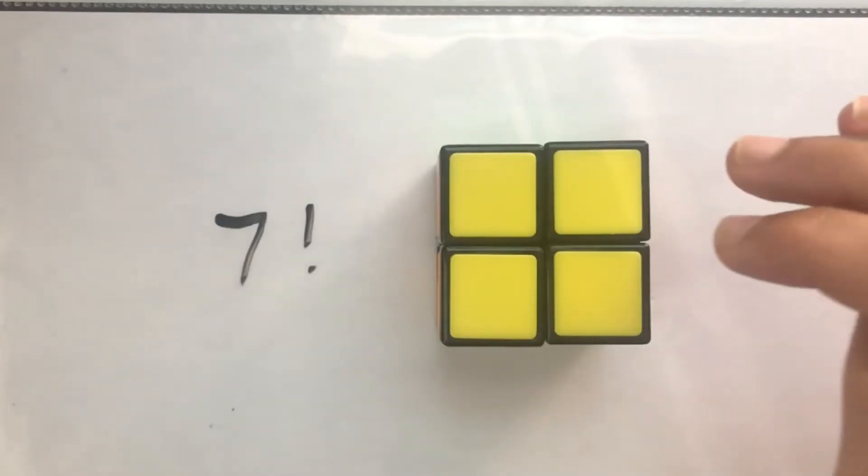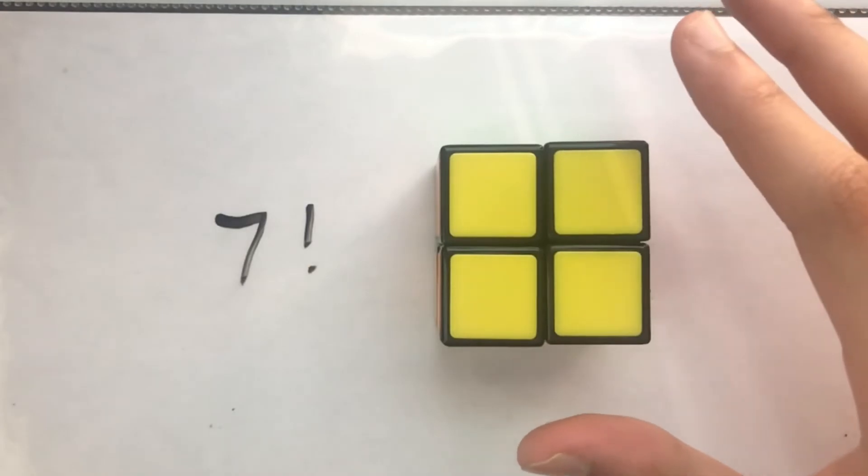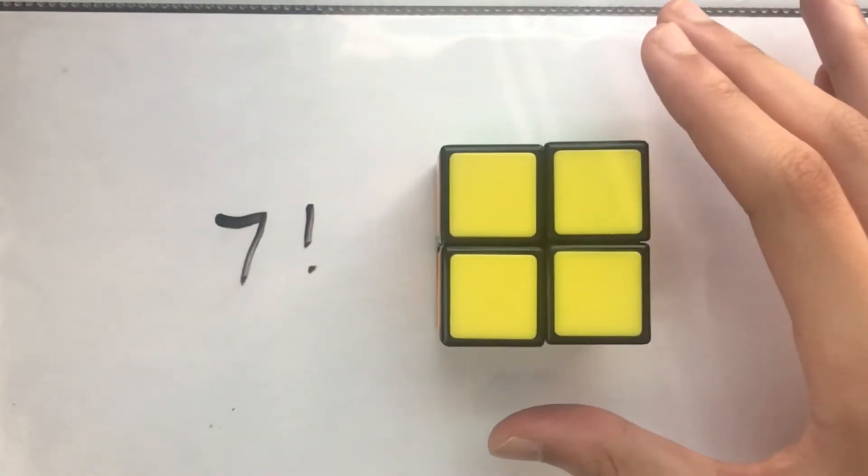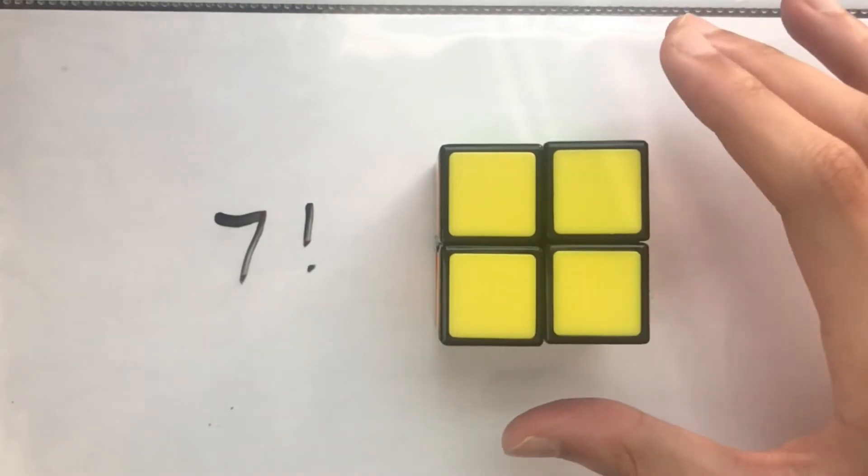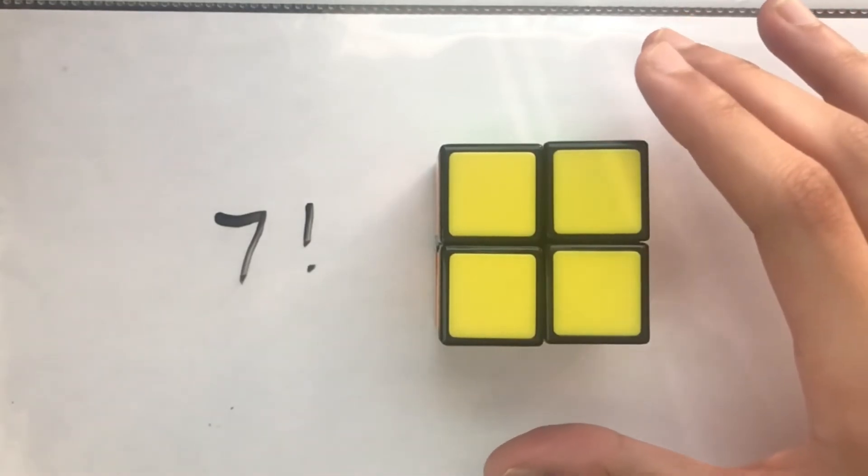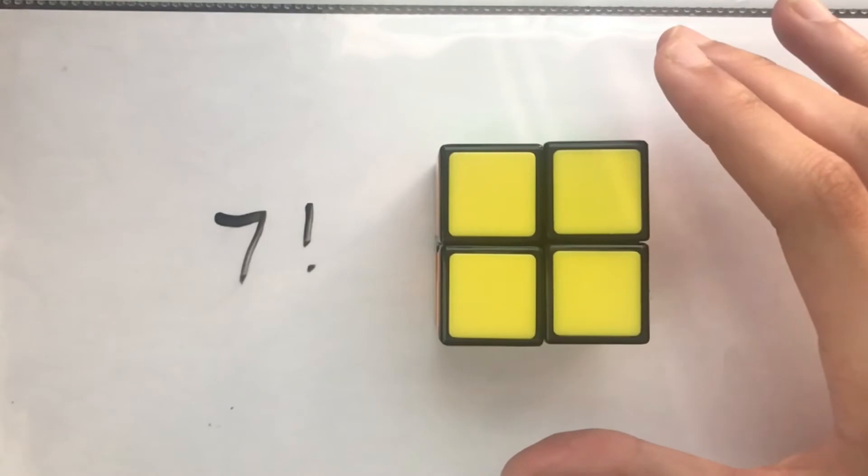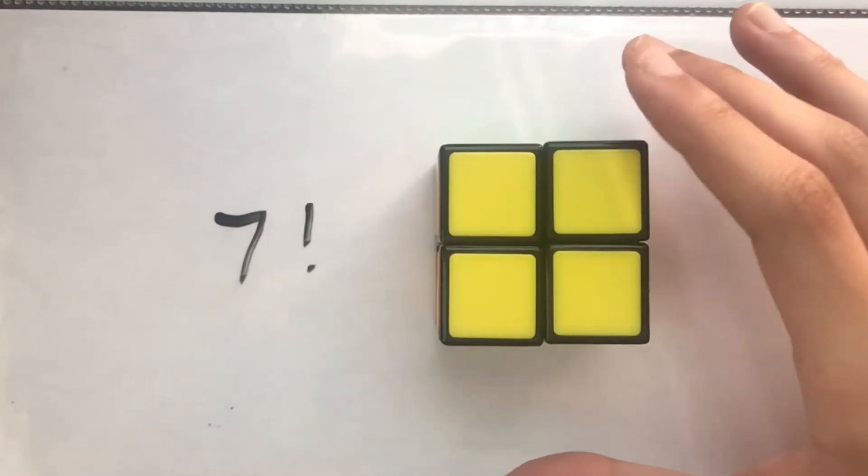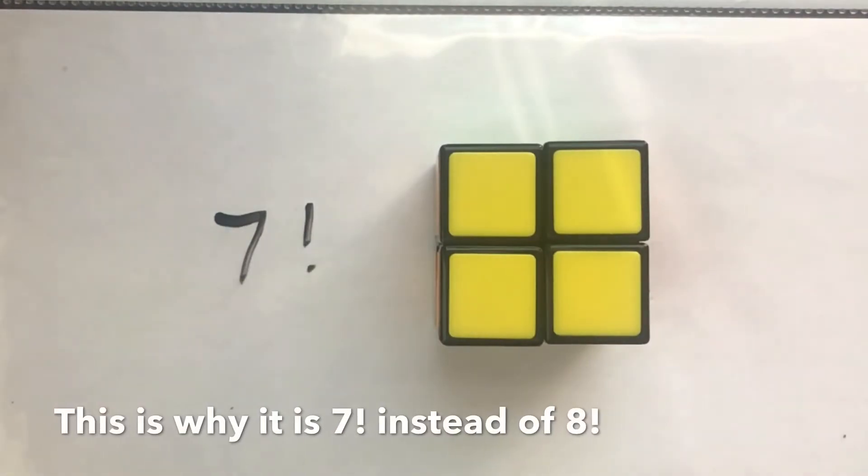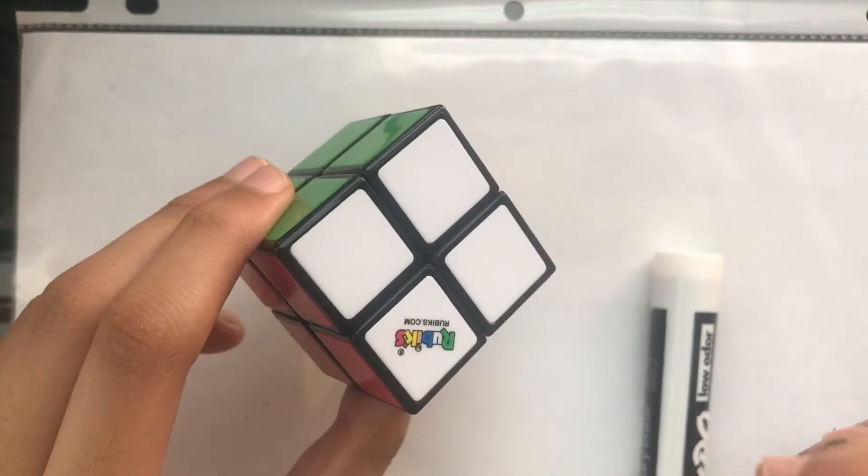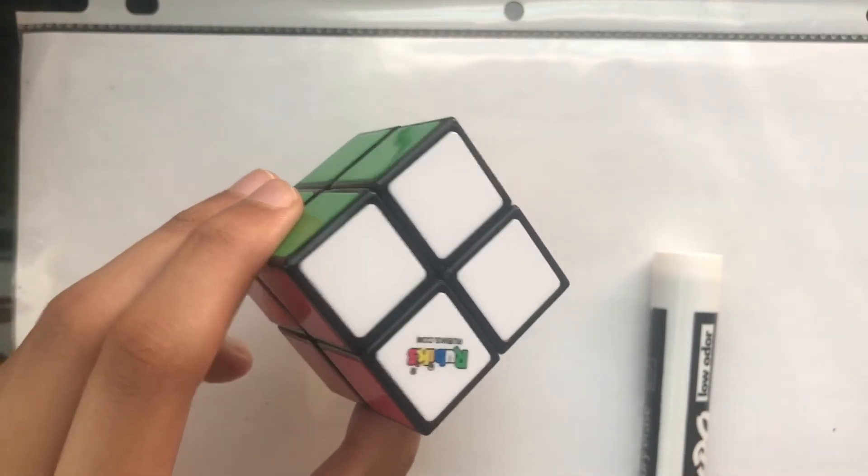So the part you need to pay attention is that we can only orient 7 corners independently. Because the orientation of the 8th corner will automatically get fixed because that depends on the orientations of the remaining 7 corners. So that's why the possible number of permutations is 7 factorial for the corners. So there are 7 factorial positional permutations.